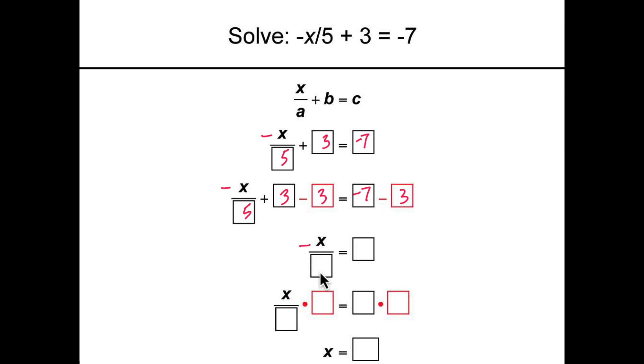Simplifying, we get negative x divided by 5 equals negative 7 minus 3 is negative 10.